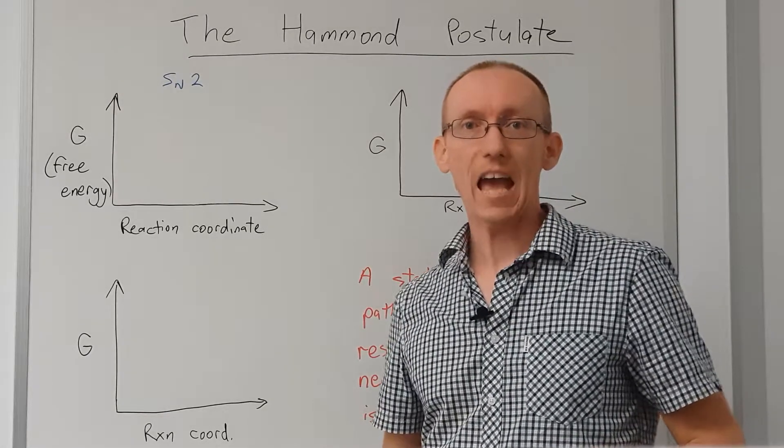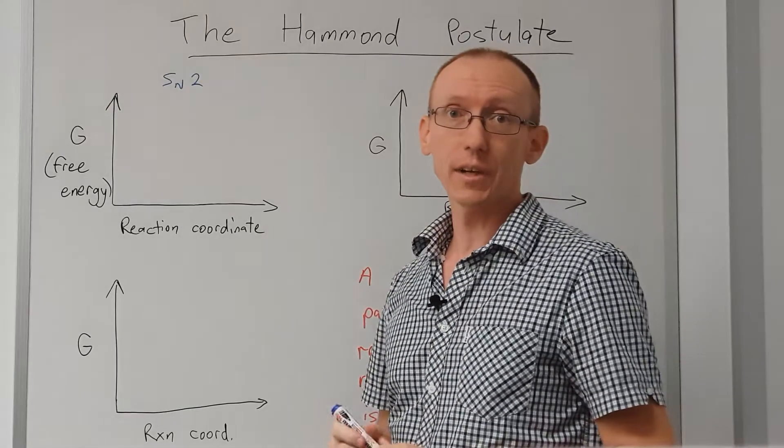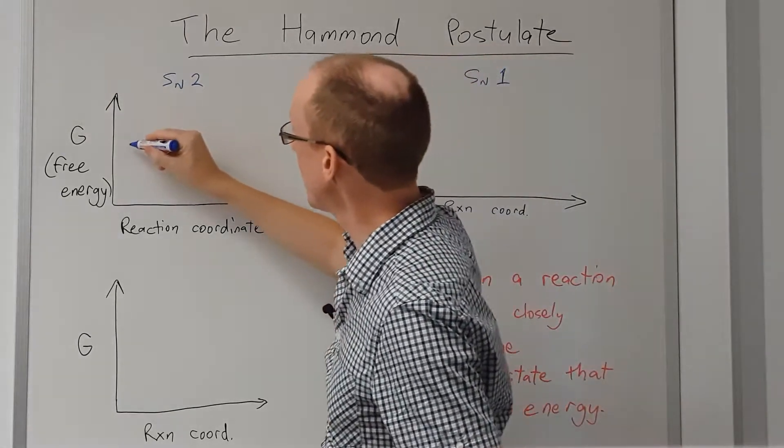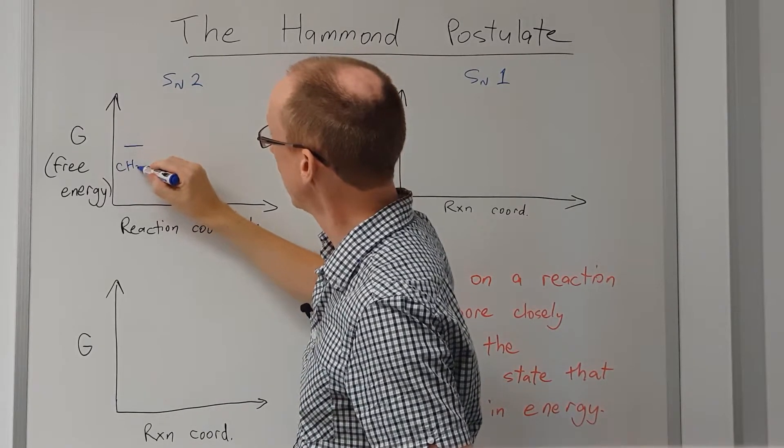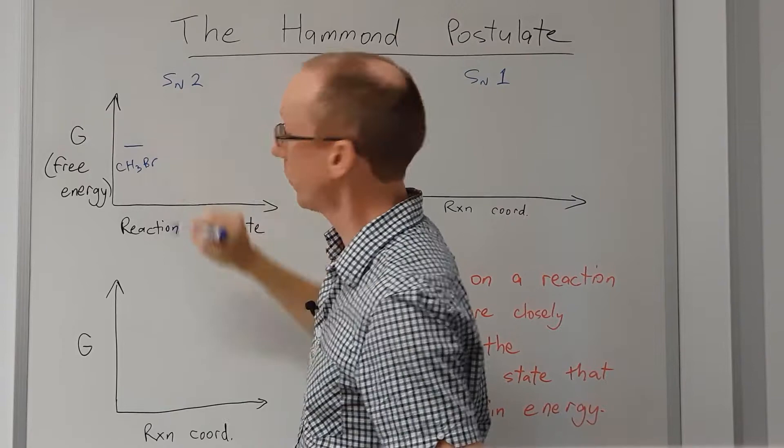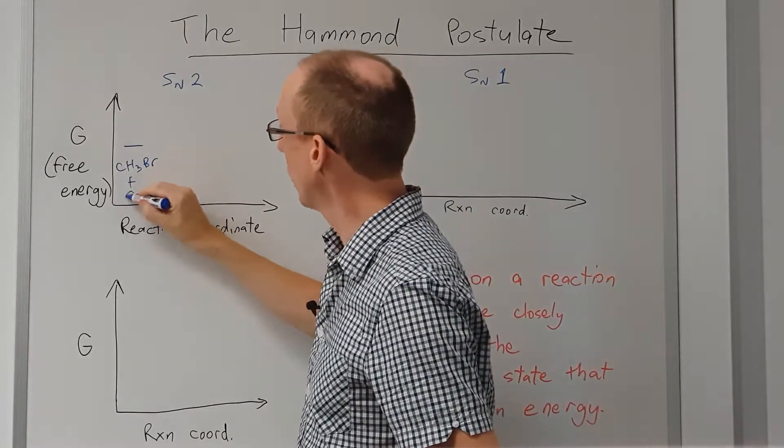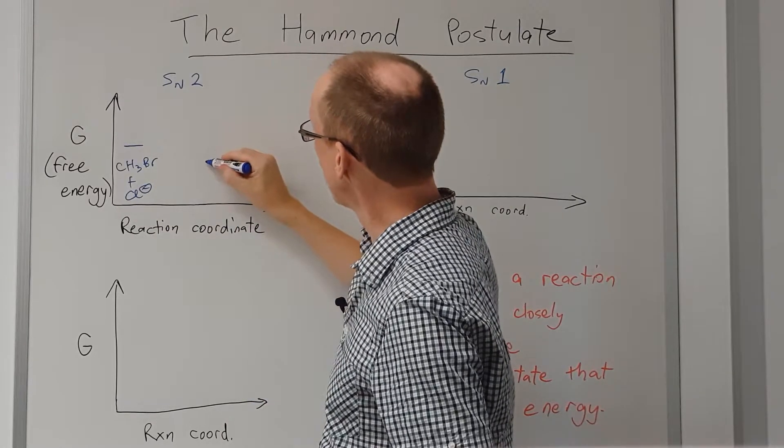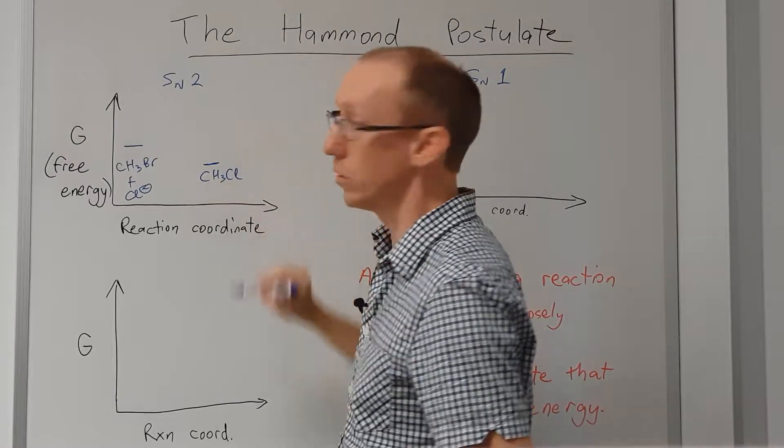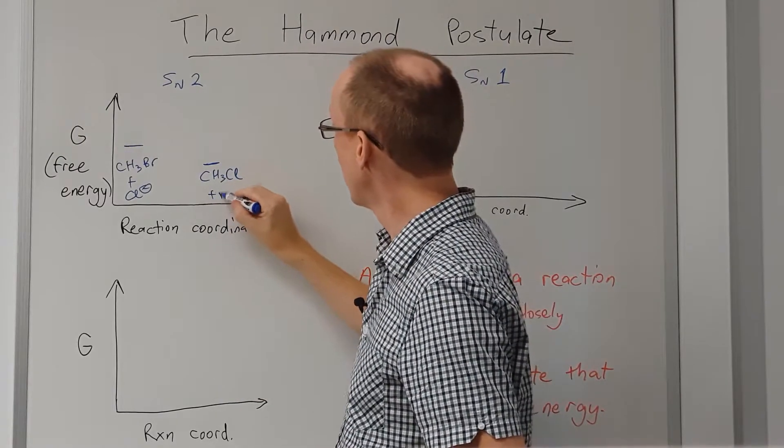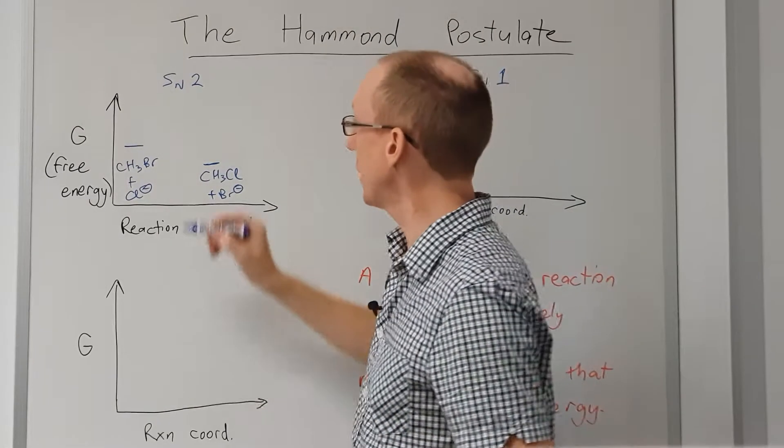In this video I'm going to talk about the Hammond postulate. If we consider an SN2 reaction, we start off with our starting materials here. For example, if we have a simple reaction of methyl bromide or bromomethane with a chloride anion, that will give us the product of chloromethane and bromide anion.